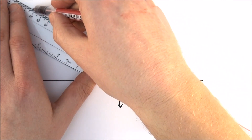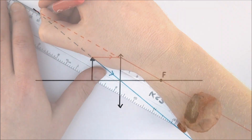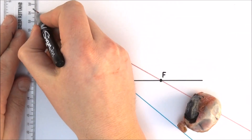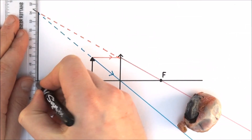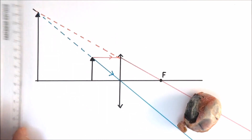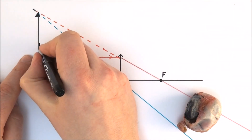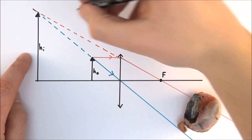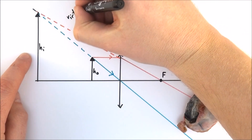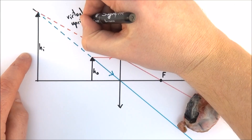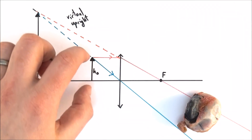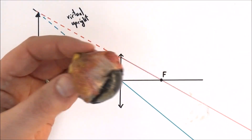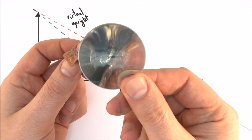As we look through, we see an image which appears to come from where these virtual rays of light cross over. This image is a lot bigger than the object, so it's been magnified. It's formed where virtual rays cross, so it's what we call a virtual image. It's also upright, which is different to the image we see when objects are a long way away. That's how to construct the ray diagram when using a converging lens as a magnifying glass.